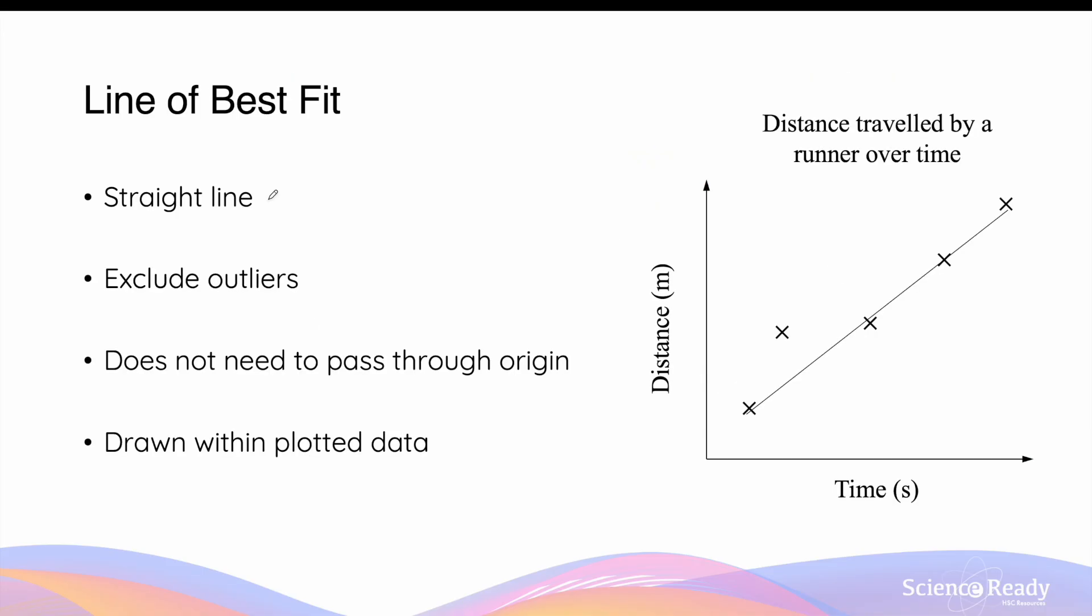Once your graph is correctly drawn and the data points are plotted, then you can choose to draw a straight line of best fit. This will give a more clear representation of the trend that's given by your data points. When drawing the line of best fit, it is important for you to first identify and then exclude any outliers. For example, in the 5 data points, the second data is clearly an outlier as it is far away from a straight line that is formed by the other 4 data points. There are two common mistakes that are often made by beginners when they're drawing the line of best fit. First of all, the line of best fit does not need to pass through the origin. It doesn't need to pass through the 0,0 point, especially if there's no data point there.